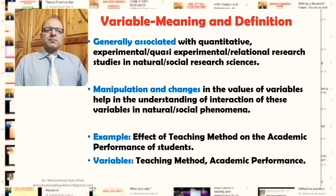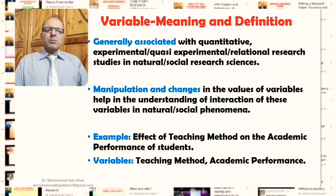Generally, variables are associated with quantitative studies, experimental research, or quasi-experimental studies — especially studies where the aim is exploration of relations between phenomena and between variables, both in natural and social sciences. Manipulation and changes in the values of variables helps researchers understand the interaction of these variables, or the interaction of factors and constructs related to natural and social phenomena.